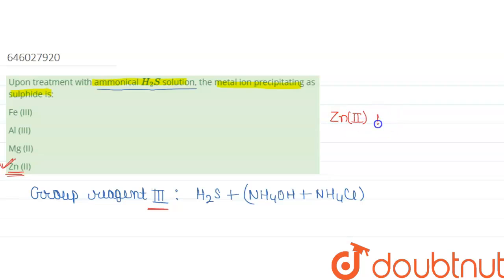2+ in presence of H2S—H2S is ammonical—you will get ZnS precipitate. ZnS precipitate is formed.